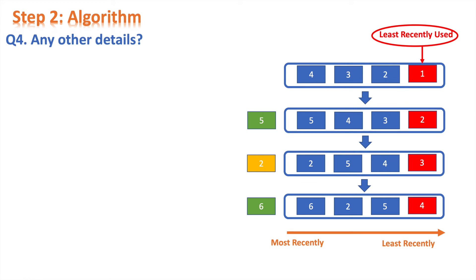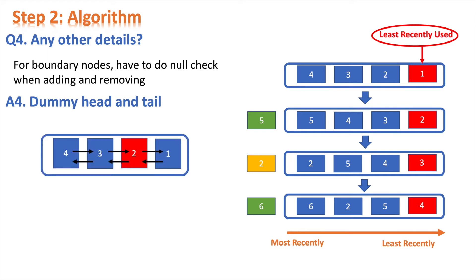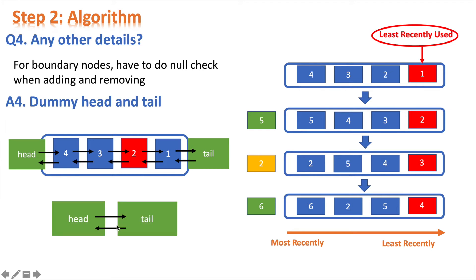One more detail: in linked lists, boundary nodes require null checks when adding or removing, which makes things complicated. To avoid this, we use a dummy head and tail. After adding dummy head and tail, we can forget about boundary node checks. At the beginning, there is only a dummy head and tail connected to each other. With all four questions solved, let's jump to the solution.